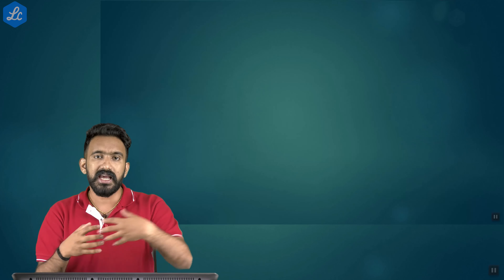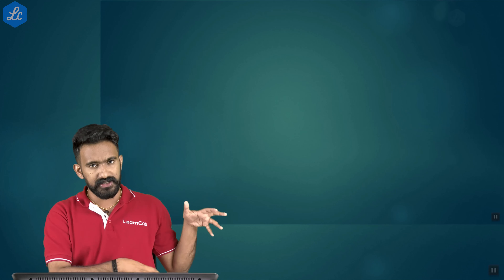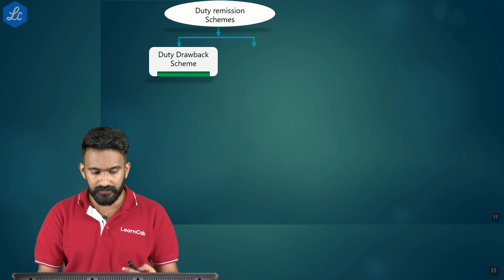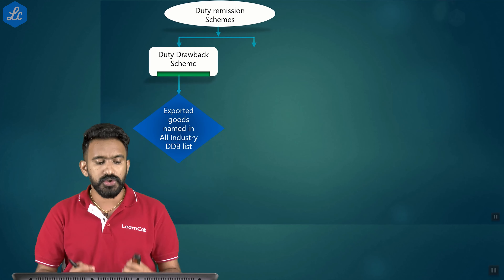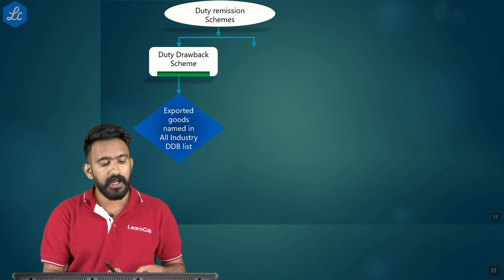To summarize the first set of promotional schemes: under duty exemption schemes, we have studied Advanced Authorization and Duty Free Import Authorization, both working in a similar manner. Next are duty remission schemes — one is the duty drawback scheme under customs, and the other is the refund of input tax credit under GST. Duty remission schemes are of two types: duty drawback schemes, and remission of duty under GST.